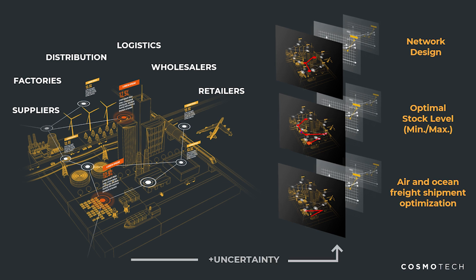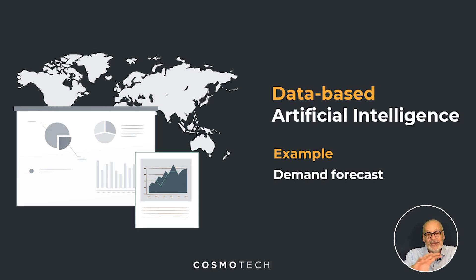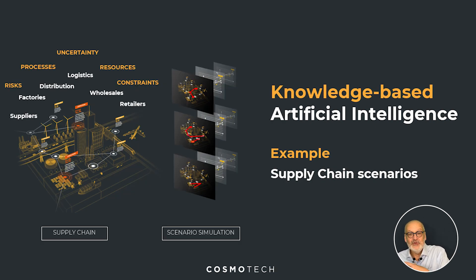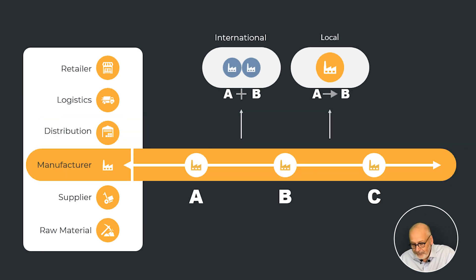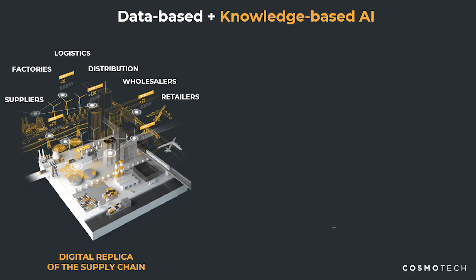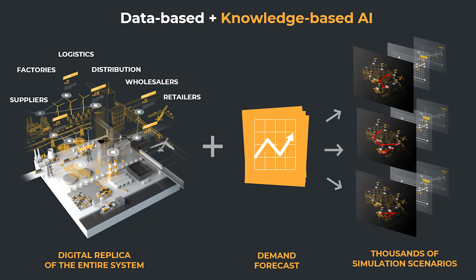These two things — demand forecast and simulation — correspond to two types of AI. The demand forecast is an AI tool you build by looking at all the past and learning from that data; it's data-based AI, it's recognition AI, that is able to say here is what the demand may be in the future. But the second part — to simulate and add uncertainty — you need knowledge: a lot of knowledge about your supply chain, how it works, what happens in the different factories, with the trucks, planes, or boats. You take all this knowledge, put it together, mix it with the demand forecast, and then run hundreds of thousands of simulations.